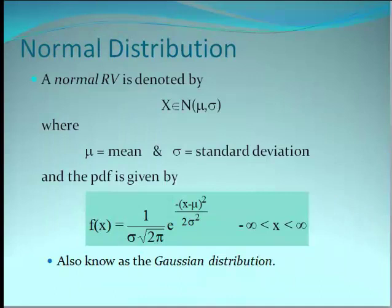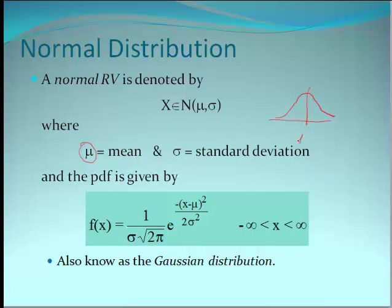A normal distribution has some set parameters. One of the main ones is the mean itself — where is that normal distribution centered? We can shift it over from zero. The other key parameter is the standard deviation.